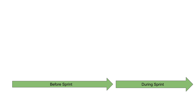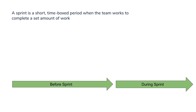Now, if we talk about the same workflow in terms of a sprint — a sprint is a short time-boxed period, typically two or three weeks, where the team works to complete a set amount of work. There are specific amounts of work taken every sprint, based on the number of user stories — it can be two, three, or whatever user stories can be completed in that duration.